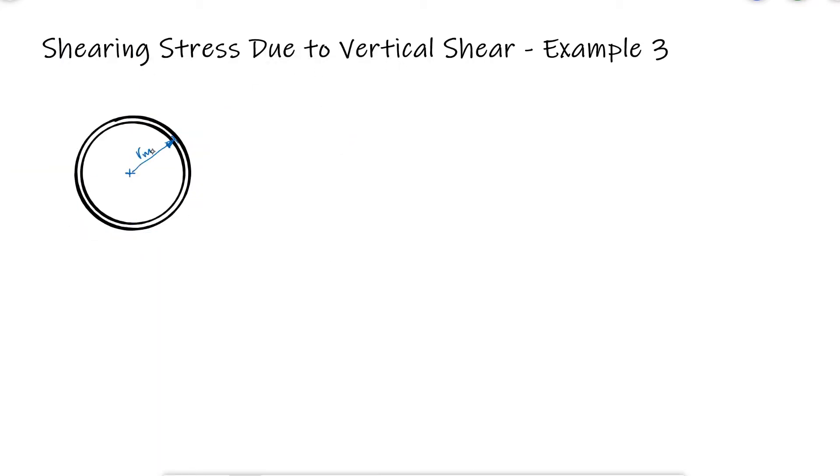For a beam that is a hollow rod and that is subjected to a vertical shear V, where will the maximum shearing stress occur and what's the expression for it in terms of the shear force V and the area A?